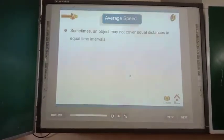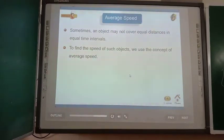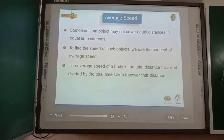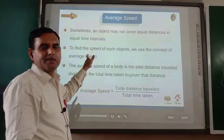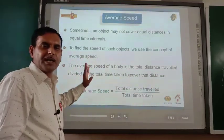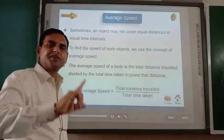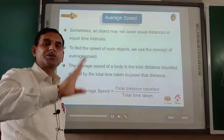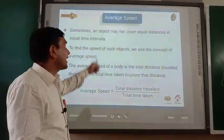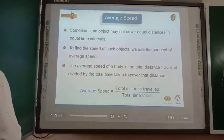Sometimes an object may not cover equal distances in equal time intervals. In such cases, we find the average speed. Average speed is the total distance travelled divided by the total time taken to cover that distance. The concept of average speed arises when an object does not travel with uniform motion — if its speed keeps changing while covering the total distance. Let us see one animated video to understand this.